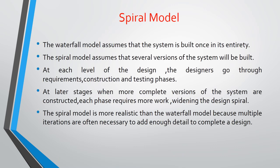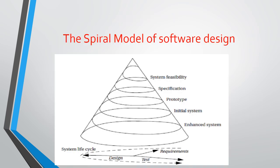The second one is the spiral model. The waterfall model assumes that the system is built once in its entirety, while the spiral model assumes that several versions of the system will be built. At each level of the design, designers go through requirements, construction, and testing phases. At later stages, when more complete versions are constructed, each phase requires more work, widening the design spiral. The spiral model is more realistic than the waterfall model. The stages are: system feasibility, specification, prototype, initial system, and finally the enhanced system.